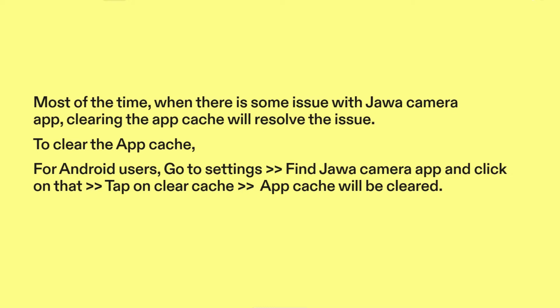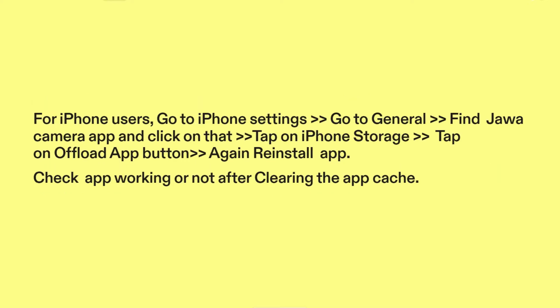To clear the app cache, for Android users: go to Settings, find Jawa camera app, click on it, and tap on Clear Cache — the app cache will be cleared. For iPhone users: go to iPhone Settings, go to General, find Jawa camera app, click on it, tap on iPhone Storage, tap on Offload App, then reinstall the app. Check if the app is working after clearing the app cache.